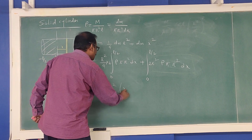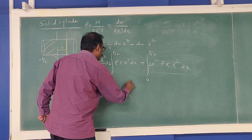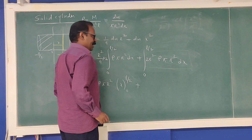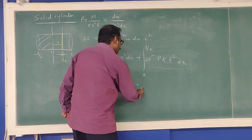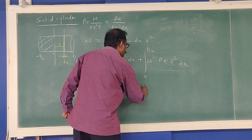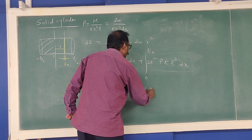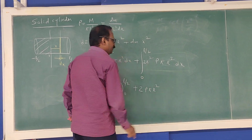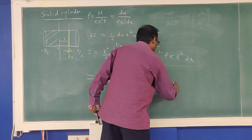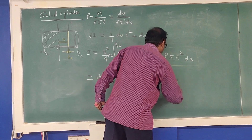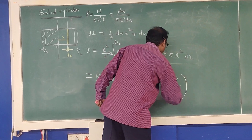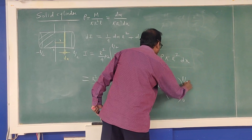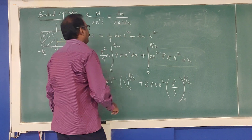The integration of x² dx from 0 to L/2 gives x³/3, with the limit giving (L/2)³/3 = L³/24. With the factor of 2 for symmetry, this becomes L³/12. The constant terms ρπR² can then be simplified.